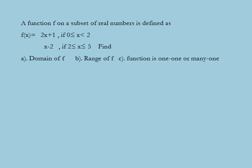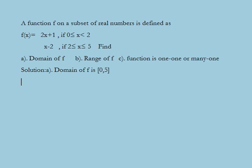Finally, we consider a problem based on functions and their types. A function f on a subset of real numbers is defined as f(x) = 2x + 1 if x lies between 0 and 2, and f(x) = x − 2 if x lies between 2 and 5, both inclusive. We have to find the domain of f, the range of f, and whether the function is one-to-one or many-to-one. The domain of f is equal to [0, 5].